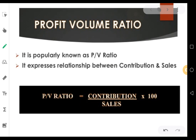One such technique is profit volume ratio, which can also be called as contribution sales ratio. Popularly it is represented as PV ratio. P stands for profit and V for volume. It can also be called as CS ratio, where C represents contribution and S for sales.